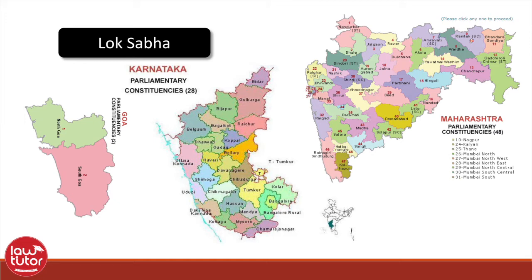The division is done in a way that the ratio between the number of seats or constituencies allotted to each state in the Lok Sabha and the population of that state is the same for all states, as far as practicable. For example, the population of Goa is lesser than that of a larger state such as Maharashtra, so Goa has only two Lok Sabha constituencies — two Lok Sabha MPs — and Maharashtra has 48 Lok Sabha constituencies, meaning 48 Lok Sabha MPs.